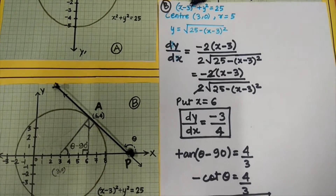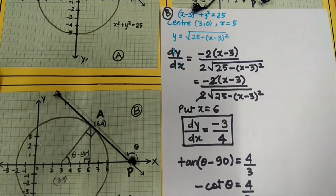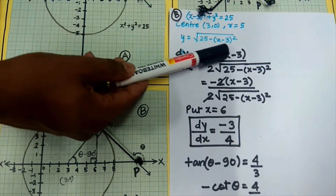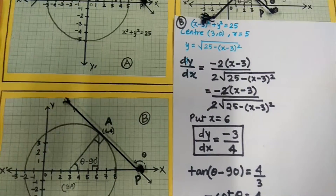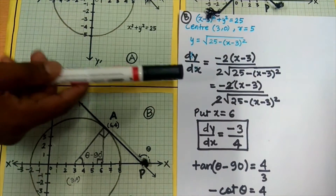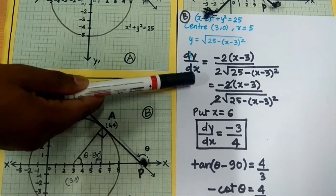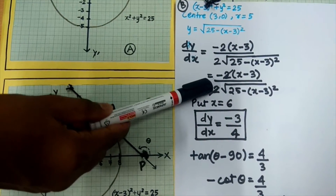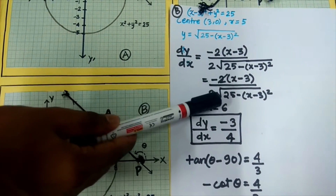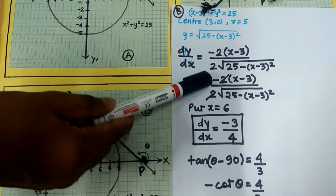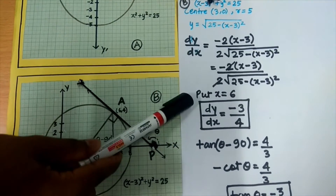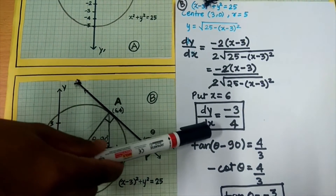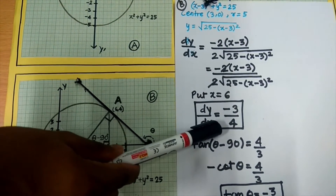We will write the equation of the circle in terms of y: y = √(25 − (x−3)²). The derivative of y gives dy/dx = −(x−3) / √(25 − (x−3)²). Now we will put x = 6, which gives dy/dx = −3/4.